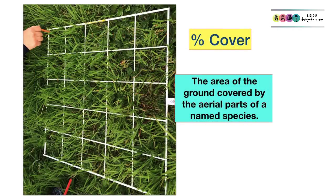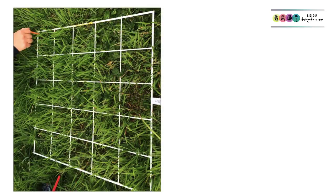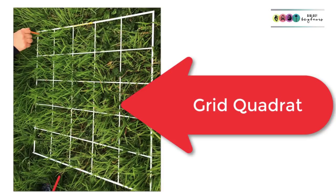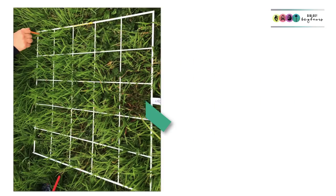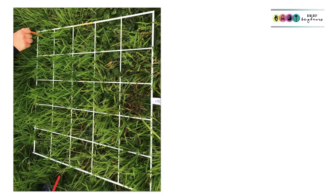The second type of quantitative study is percentage cover. This is determining the area of the ground covered by the aerial parts of a named species of plant — in other words, the area of the ground covered by a species of plant. Determining percentage cover means using a different type of quadrat called a grid quadrat, which is divided into 25 squares and measures 0.5 metres by 0.5 metres.